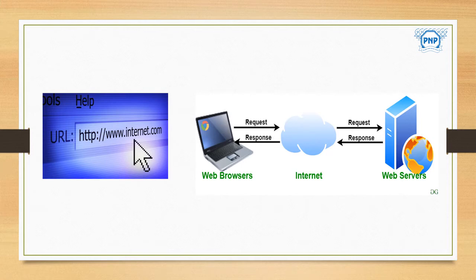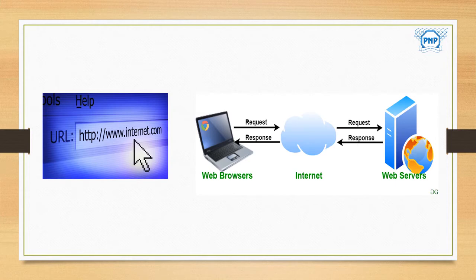The web server receives the request. At this point an HTTP connection is established between the server and the client. The web server sends the requested information — text, graphics, and sound — in the form of a home page back to the web browser. At this point the HTTP connection between the client and the web server is closed, but can be re-established when the need arises.